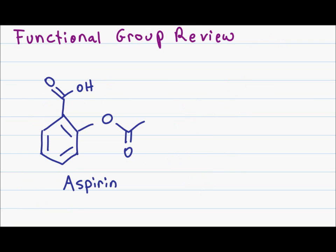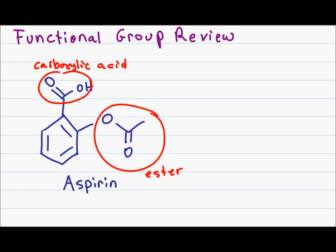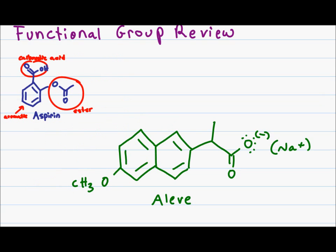For this example, let's try to identify all functional groups in aspirin. I have a carbonyl group directly attached to a hydroxyl group, so this has to be a carboxylic acid. On the right, I have a carbonyl group attached to an oxygen attached to another big molecule, so this has to be an ester. The last group on this molecule looks like a benzene ring, but if benzene is attached to a bigger molecule, it's called an aromatic group.